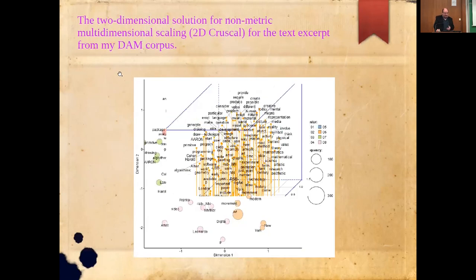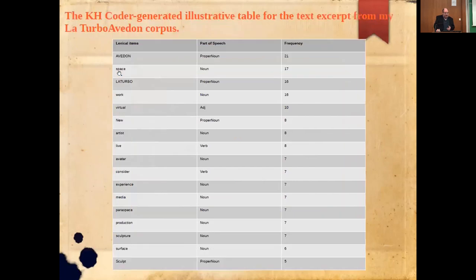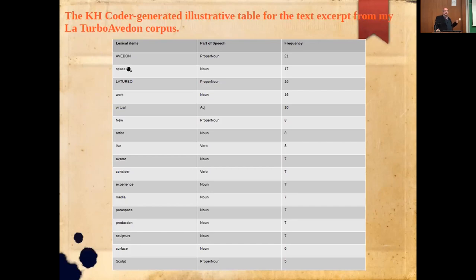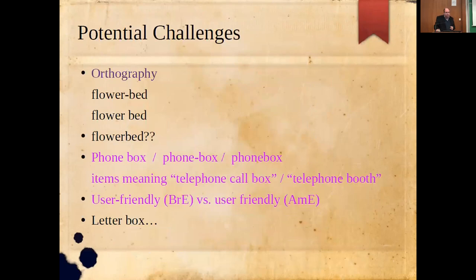The results include visualizations, different cluster analyses, and an automatically generated table which tags parts of speech — extremely important for linguists. For example, 'New' was treated as a proper noun because it was written with a capital letter. This is one potential challenge with this free software tool: it does not make fine distinctions between proper nouns and common nouns.